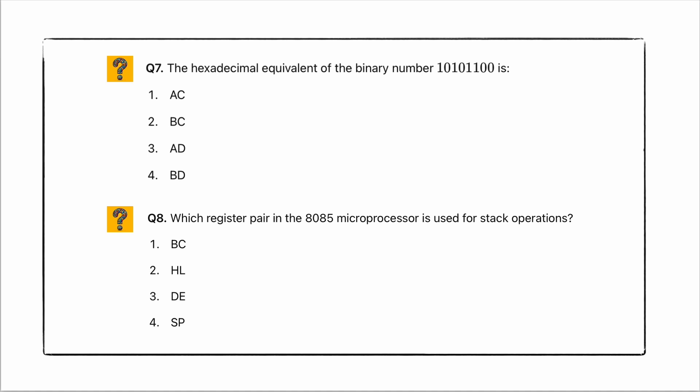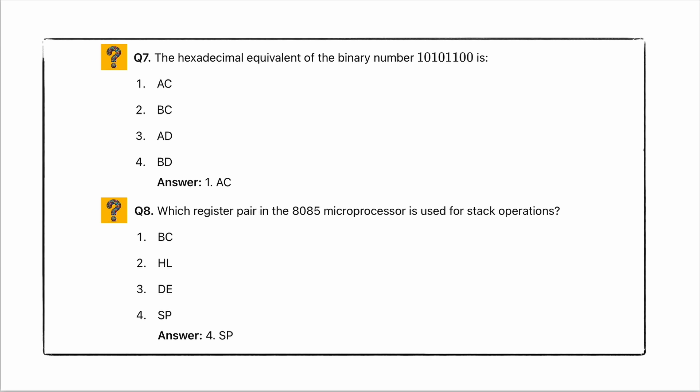Next question: which register pair in the 8085 microprocessor is used for stack operation? Directly coming to the answer — AC. The hexadecimal equivalent of binary number 10101100 is AC. The register pair in the 8085 microprocessor used for stack operation is SP.